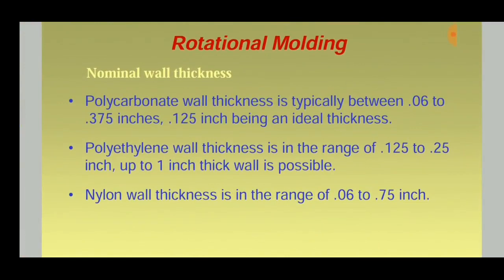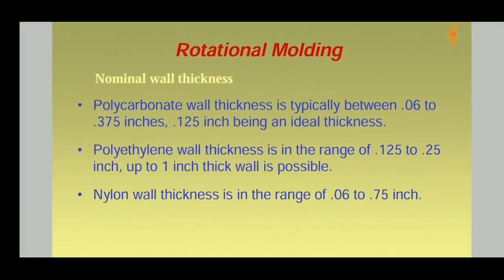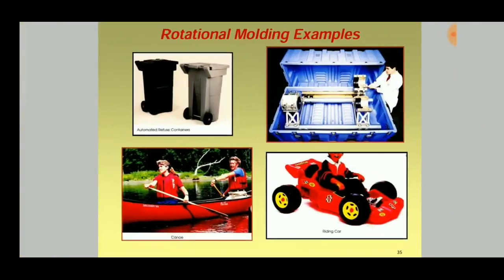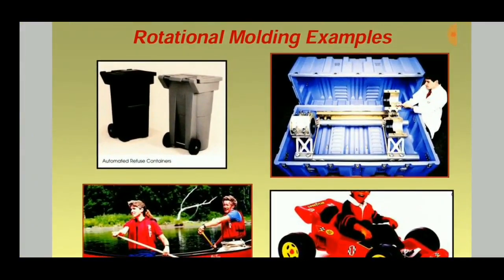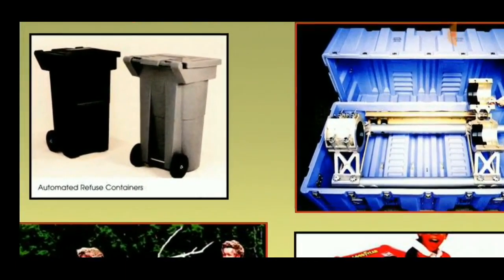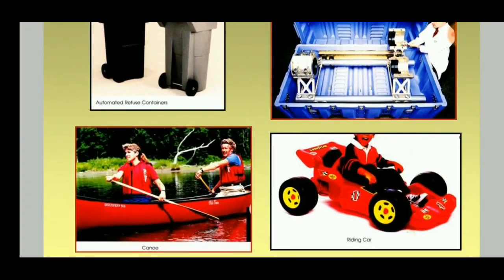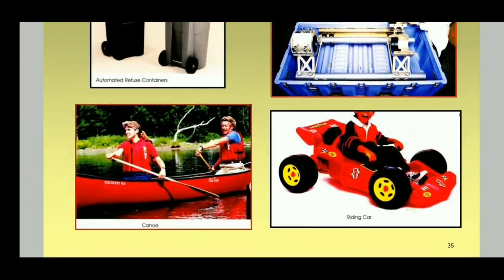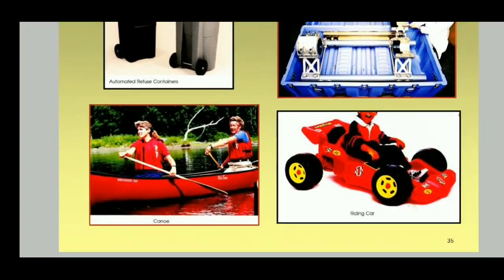The nominal wall thickness for polycarbonate is 0.06 to 0.375 inches, with 0.125 inches being the ideal thickness. Other materials have their own nominal thickness values. Products made from rotational molding include garbage cans, molds, riding cars for kids, and boats.